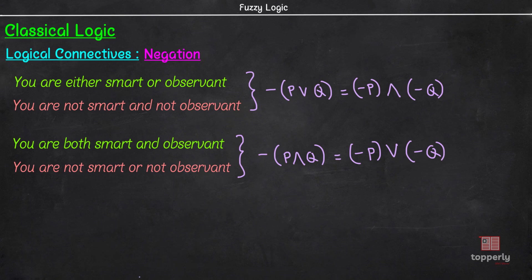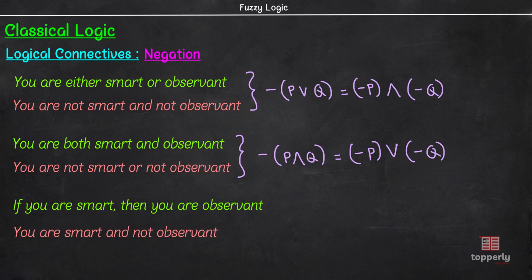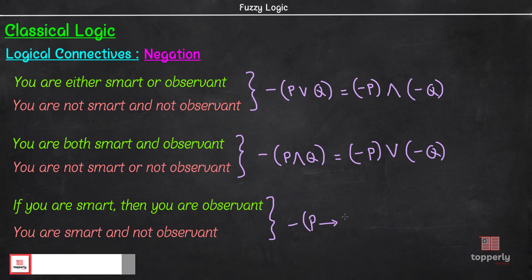Next, consider the statement 'if you are smart then you are observant.' For this statement to be false, you have to be smart and not observant. So, the negation will be 'you are smart and not observant.' To generalize, for two propositions P and Q, negation of P implies Q is equal to P conjunction negation of Q.